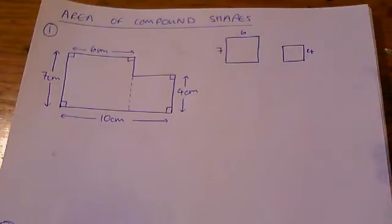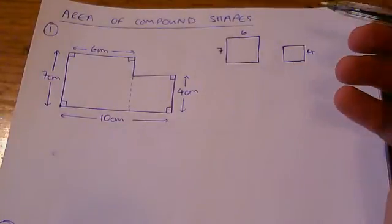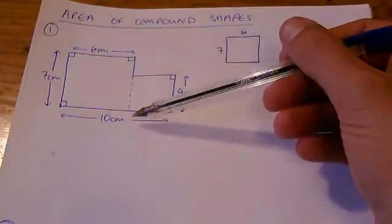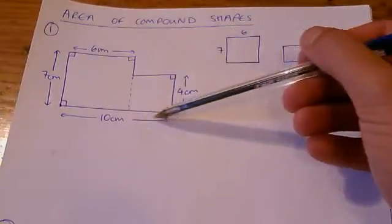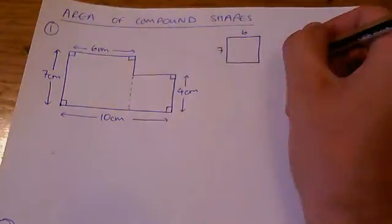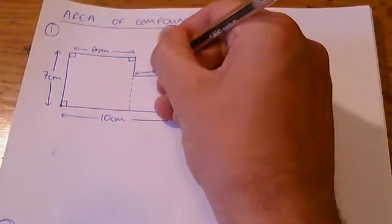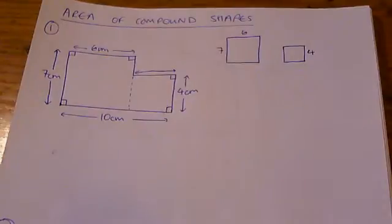One possibility is that it's 10 centimeters, but just check that it's not 10 centimeters all the way along. I've got to find this distance here, the width of the small rectangle. How can I do that?